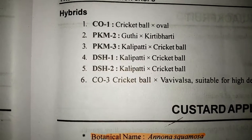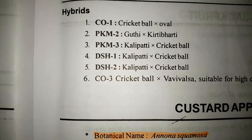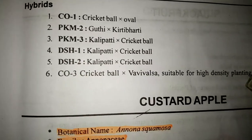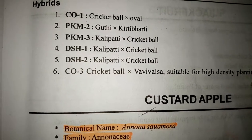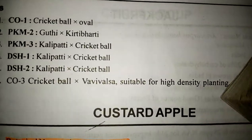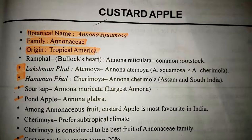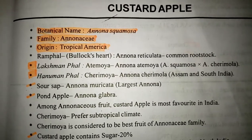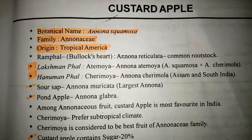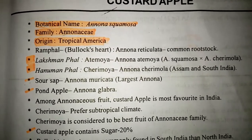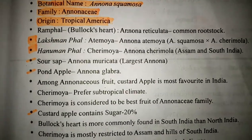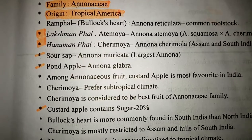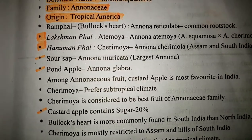CO2 is a clonal selection from Baramasi. PKM1 is a clonal selection from Gutti dwarf variety. Other varieties include Baramasi, Piripati, suitable for high-density planting. Hybrid varieties of Sapota are CO1 (Cricket Ball), PKM2 (Gutti into Krithiparthi cross), PKM3 (Highly Patti into Cricket Ball cross), DHS1, DHS2, and CO3 (Cricket Ball into Bavi Valsa), suitable for high-density planting.